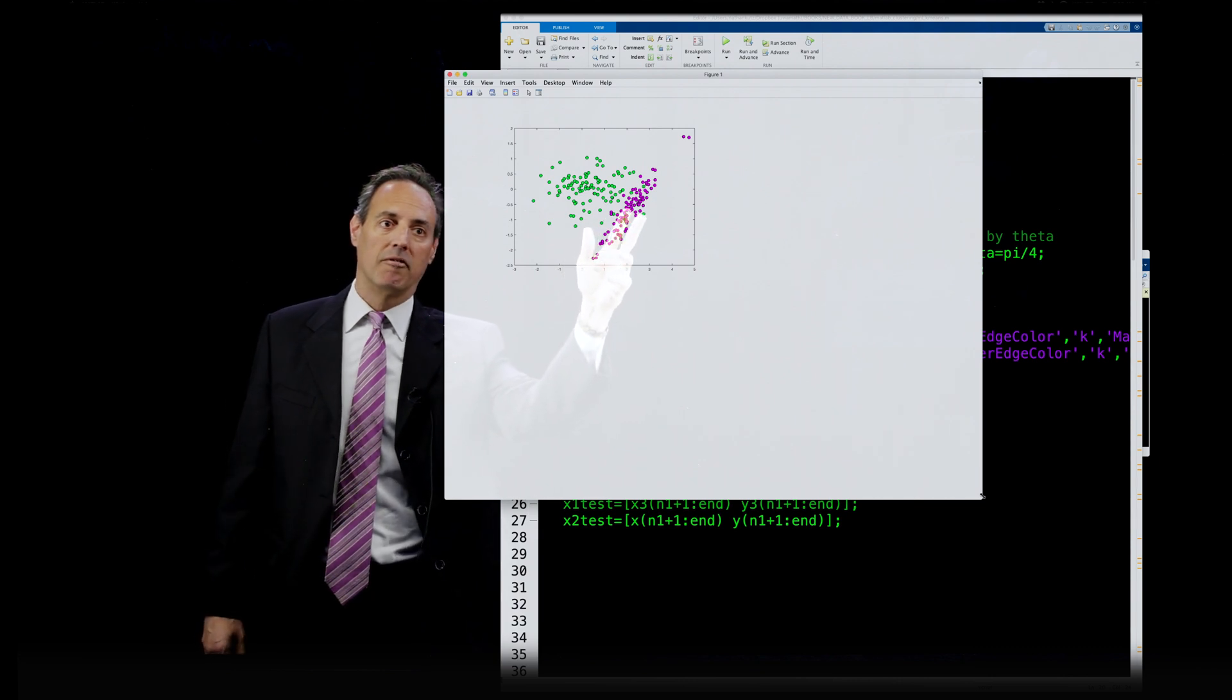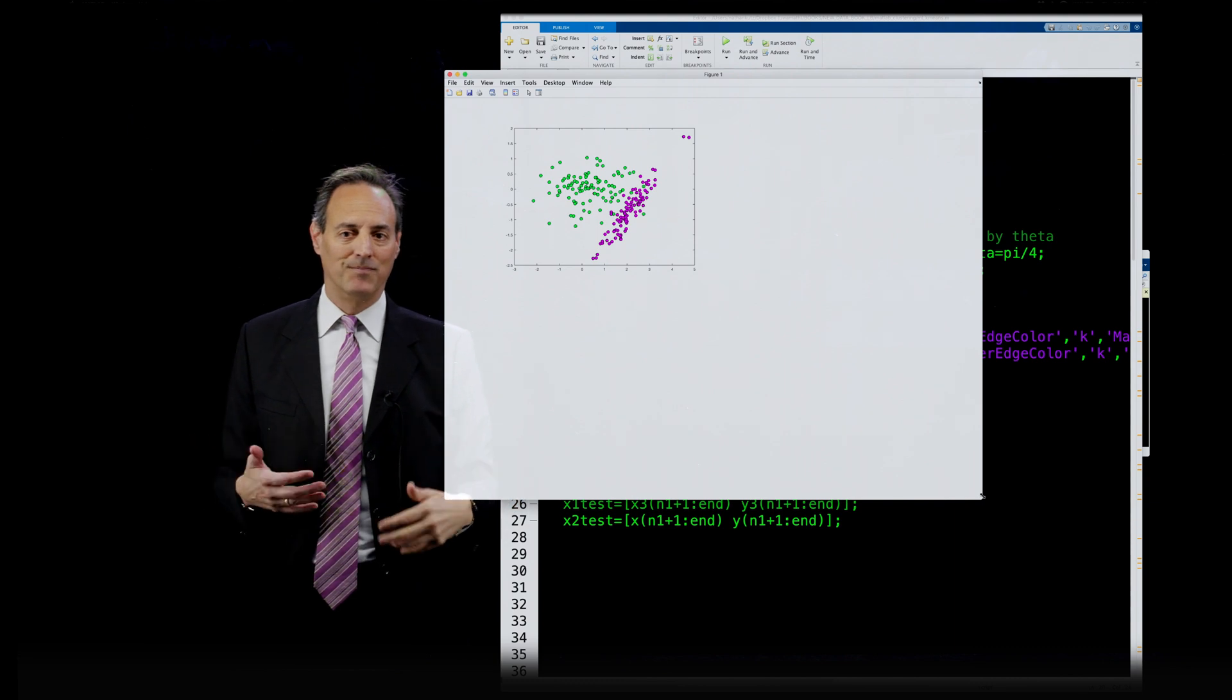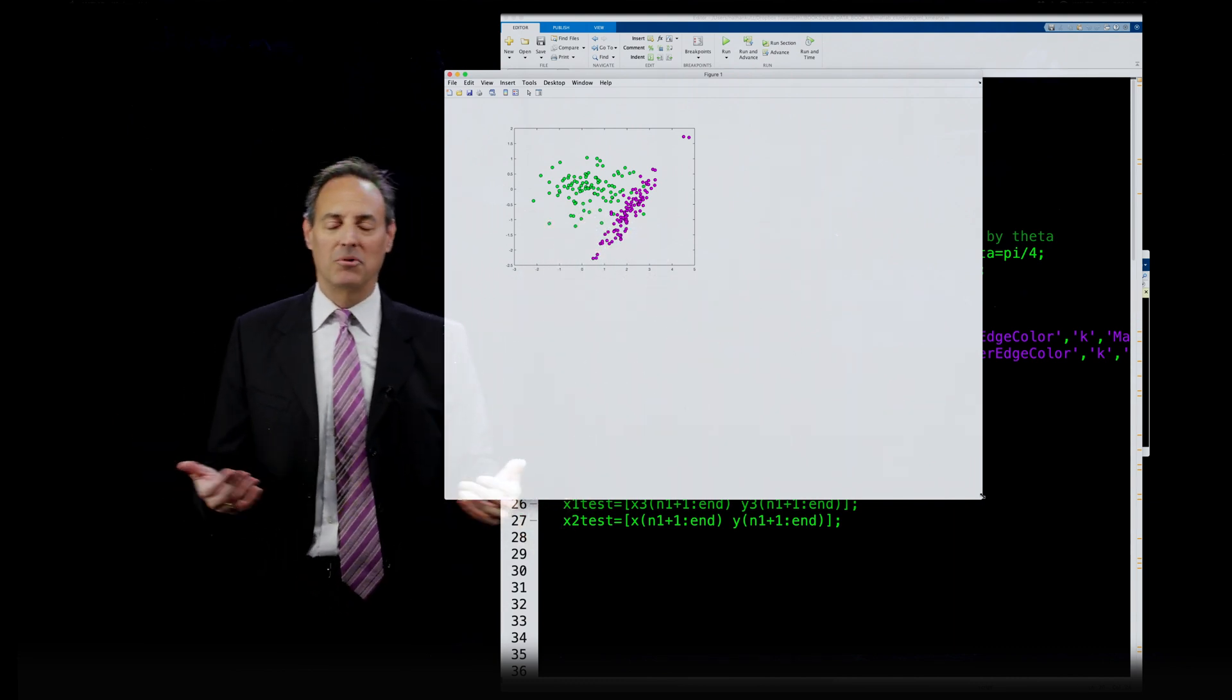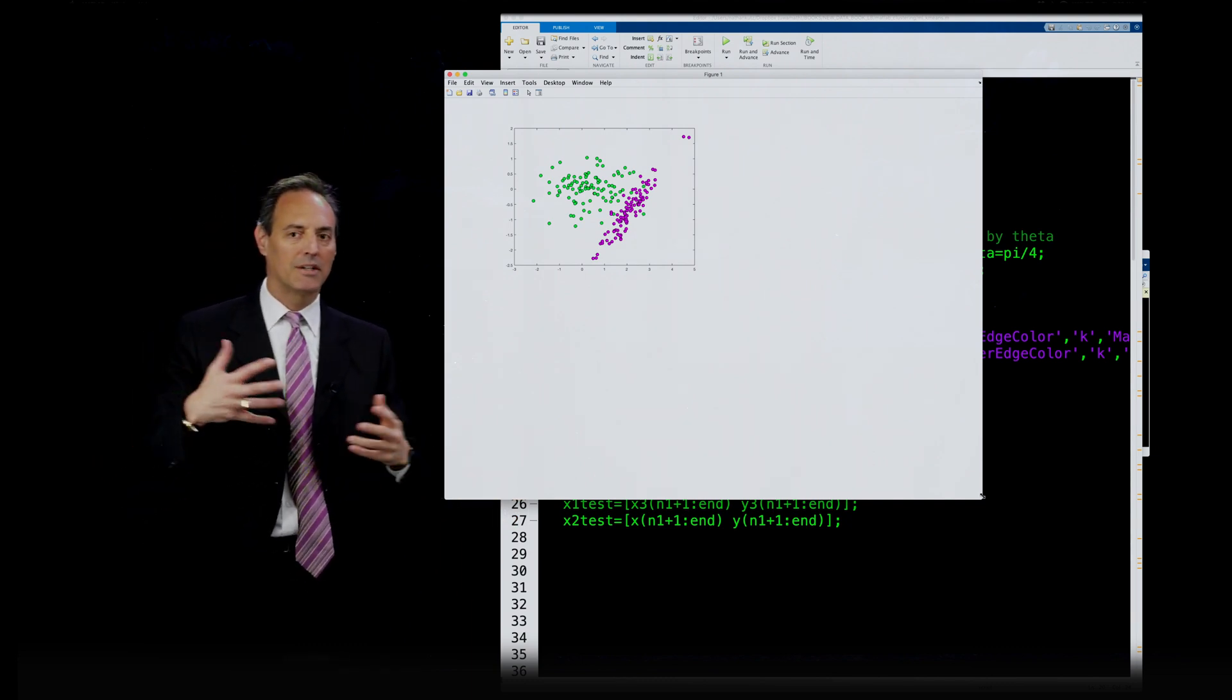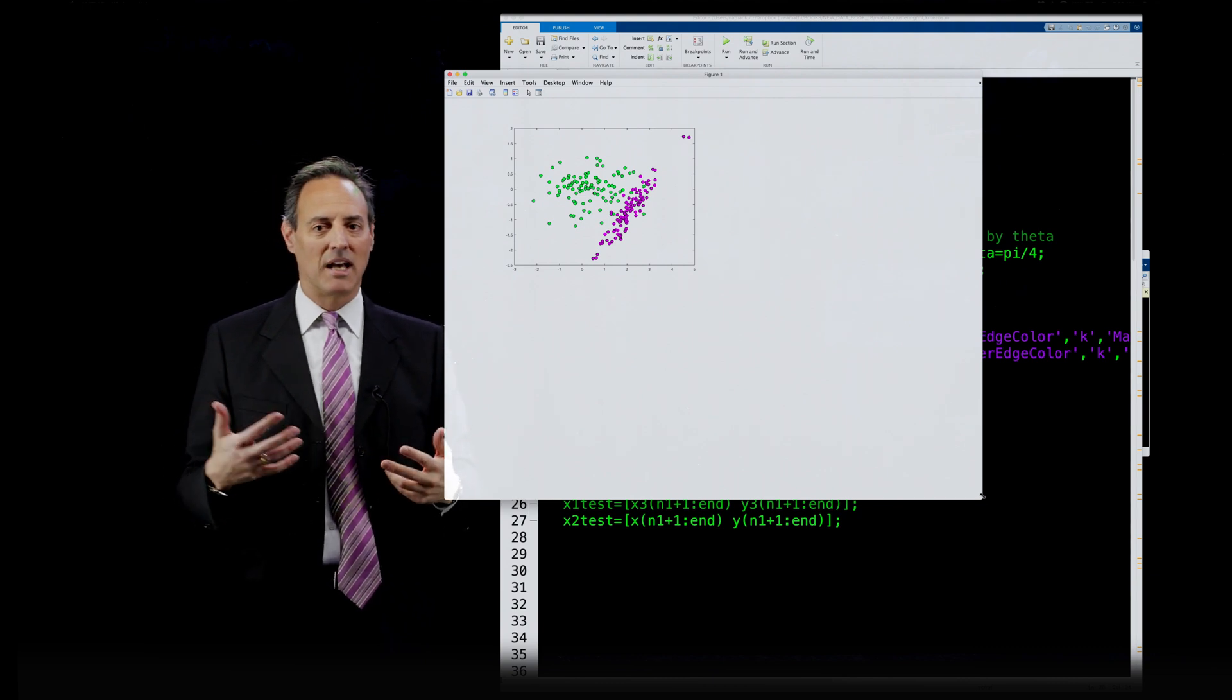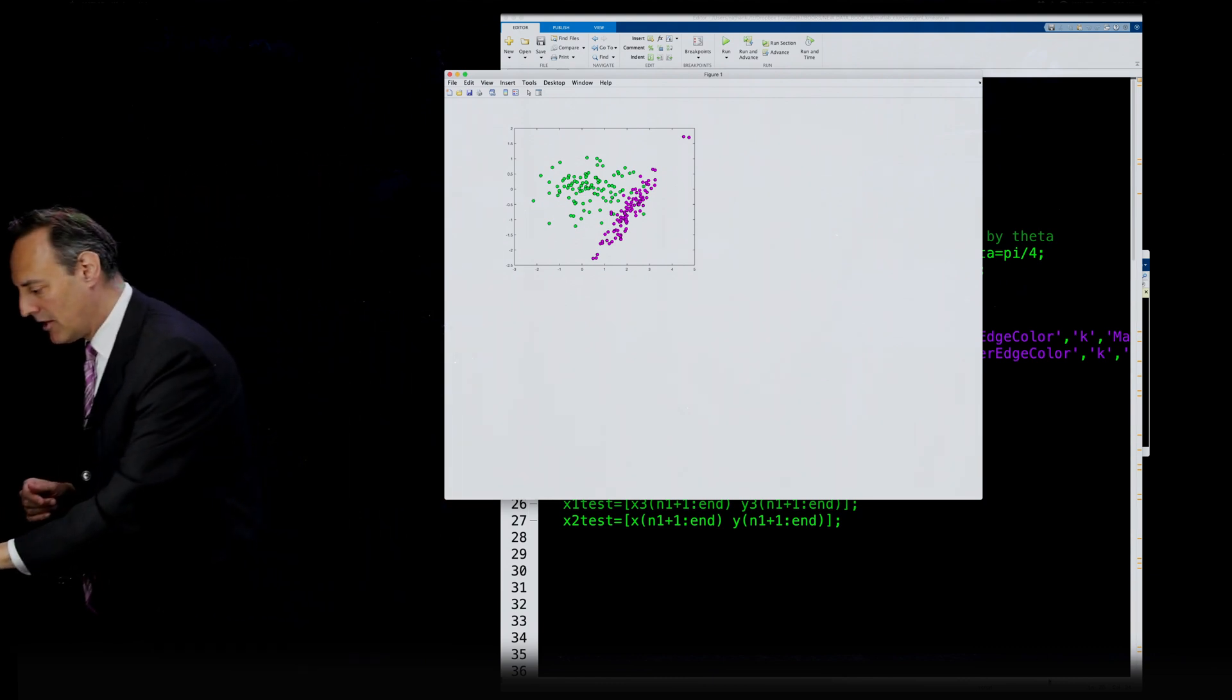And of course, your ability to get it correct depends a lot on the data set. If I would move this magenta further into the green region, you'd be less successful. And if I move this magenta way out here, you'd almost get perfect classification every time. So the data you have really determines how successful you're going to be in these tasks.